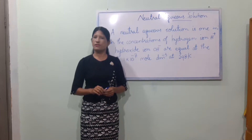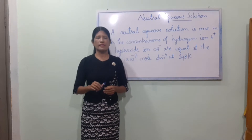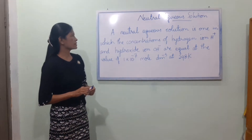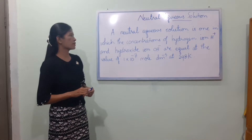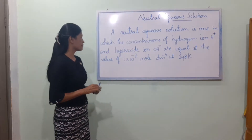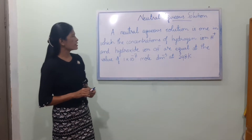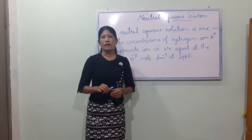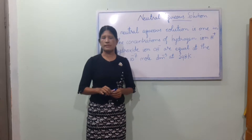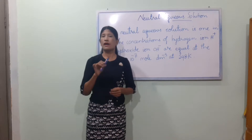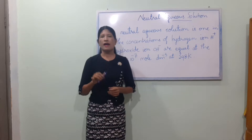A neutral solution is one in which the concentrations of hydrogen ion H⁺ and hydroxide ion OH⁻ are equal, with values of 1×10⁻⁷ mol/dm³ at 298 Kelvin. Standard temperature is 25 degrees Celsius.